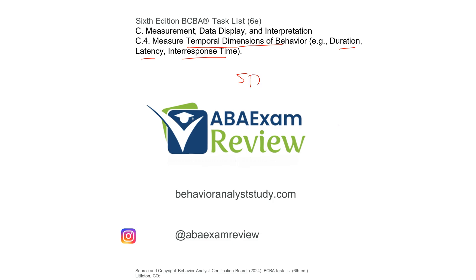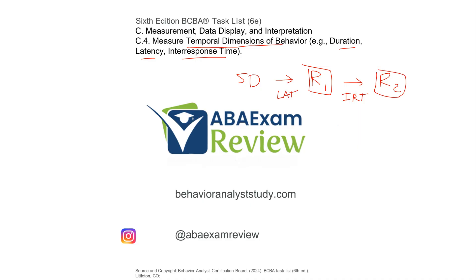If we look at a standard idea of a discriminative stimulus, the first response, and the second response: latency is the time between the SD and response one. Inter-response time is the time between response one and response two, and so on. Duration is the length of each individual response. It's really as simple as that — temporal dimensions of behavior and time become quite easy.